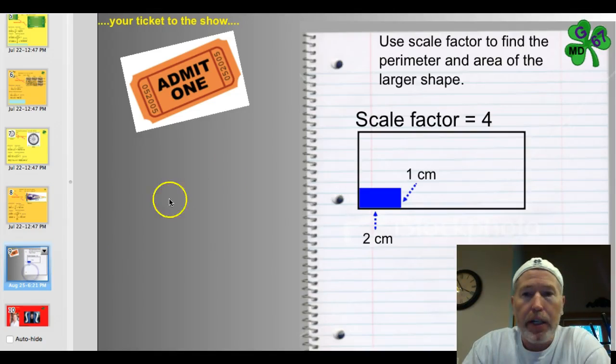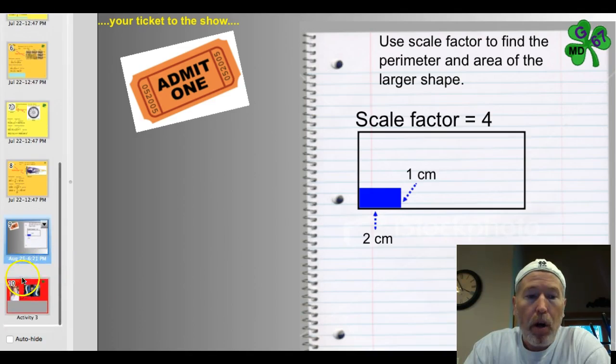All right. You're ready for the ticket to the show. One problem tonight. Use the scale factor to find the perimeter and area of the larger shape. The smaller shape is 2 centimeters by 1 centimeter. And, the scale factor is 4.